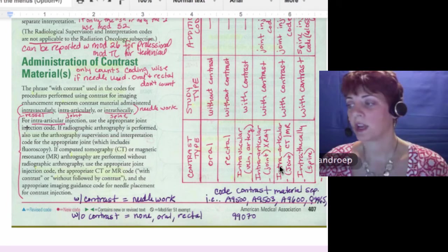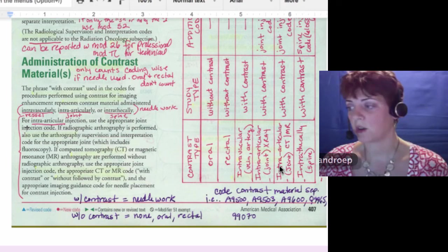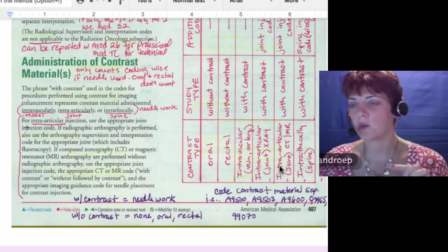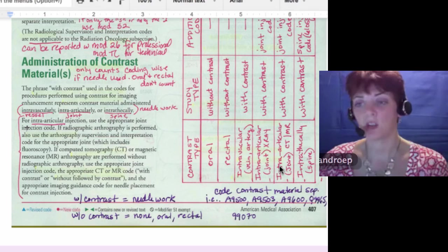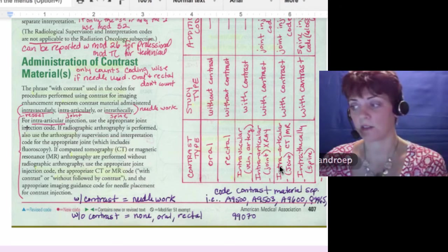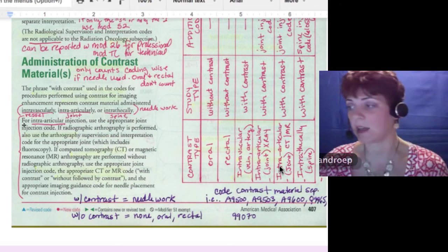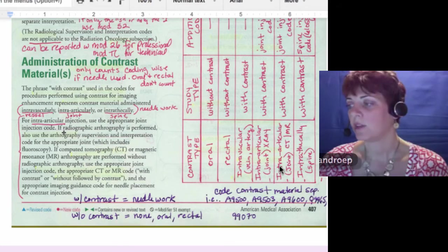This next paragraph says, for intra-articular injection in the joint, use the appropriate joint injection code. This is letting you code something in addition to the radiology codes that we just looked at. It's a permission statement in the guidelines. If radiographic arthrography is performed, also use the arthrography supervision and interpretation code for the appropriate joint, which includes fluoroscopy.